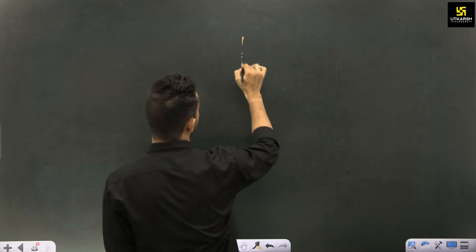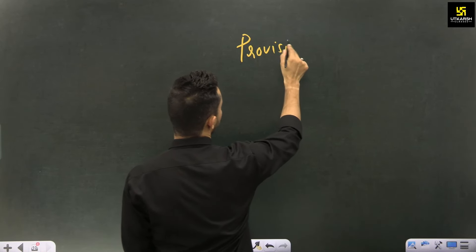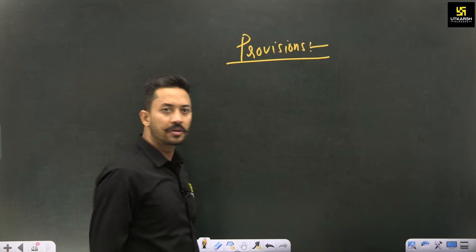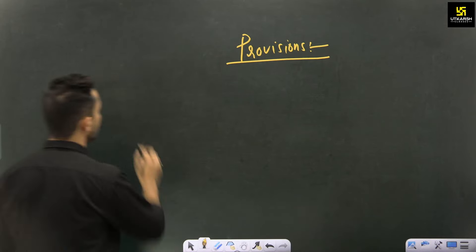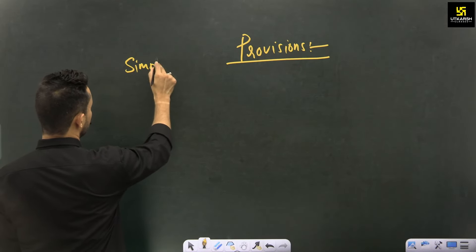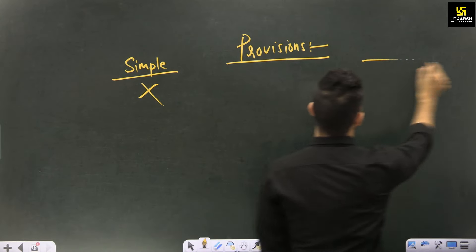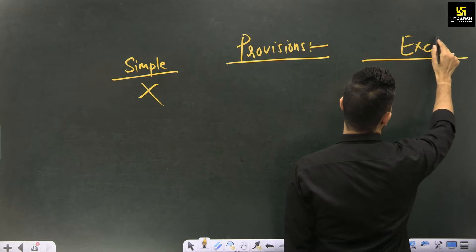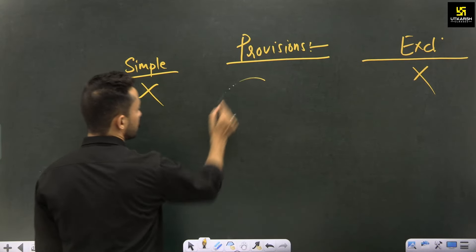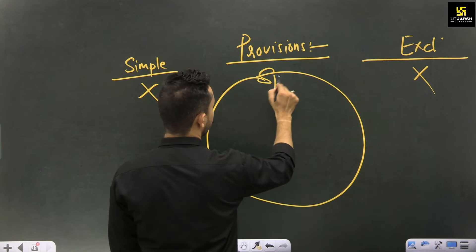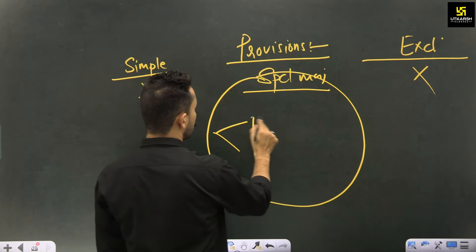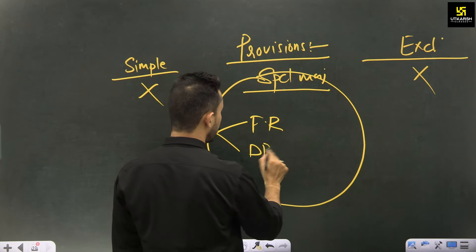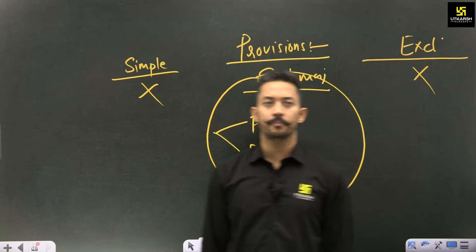These two conditions of special majority must be fulfilled for the bill to be passed. Now, which provisions require special majority under Article 368? Most provisions of the Indian constitution — those not covered under simple majority or exclusive majority — require special majority. For example, Part 3 (Fundamental Rights) and Part 4 (DPSP): if you want to bring any changes in any provisions of Part 3 and Part 4, you must require a special majority under Article 368.